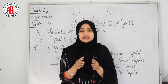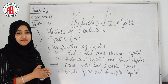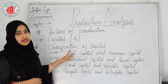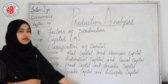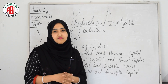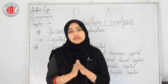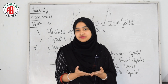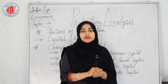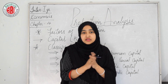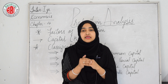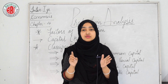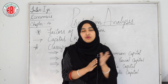Capital can be classified into: real capital and human capital; individual capital and social capital; fixed capital and variable capital; and tangible capital and intangible capital. Real capital refers to physical goods such as buildings, plant, and machinery, while human capital refers to human skills and ability. Individual capital is personal property, whereas social capital belongs to the community as a whole, such as roads and bridges.